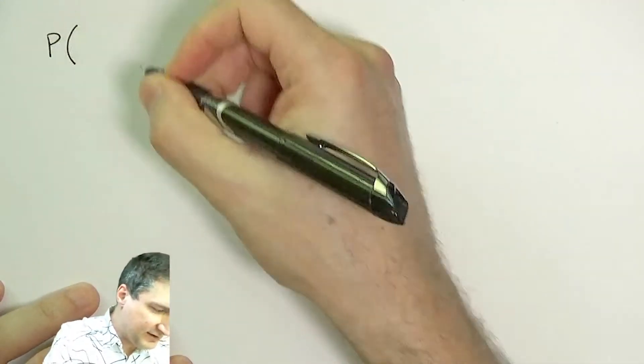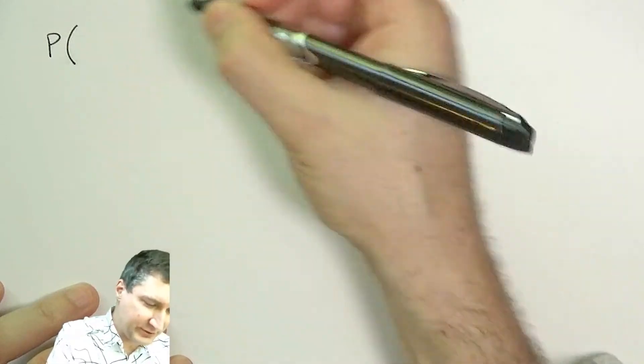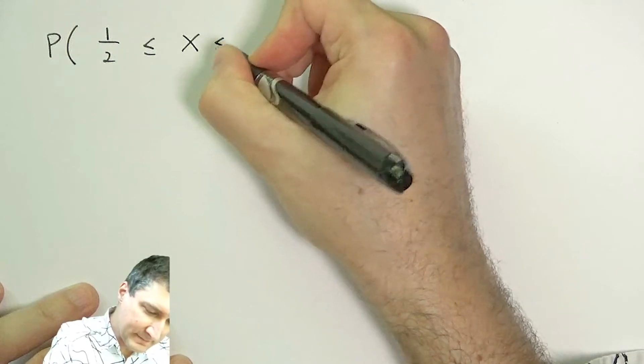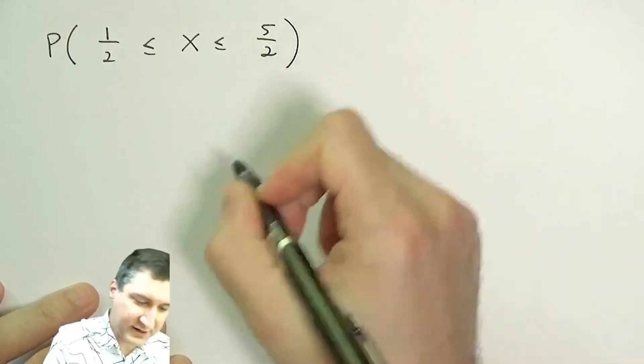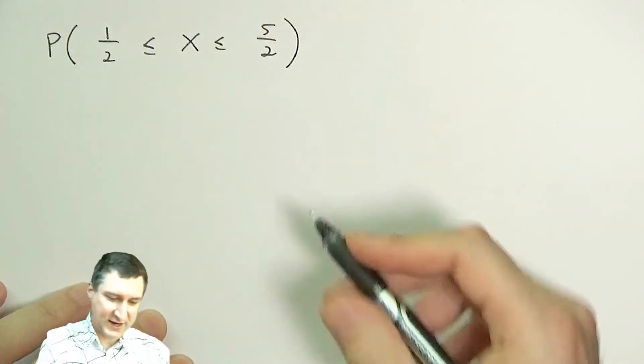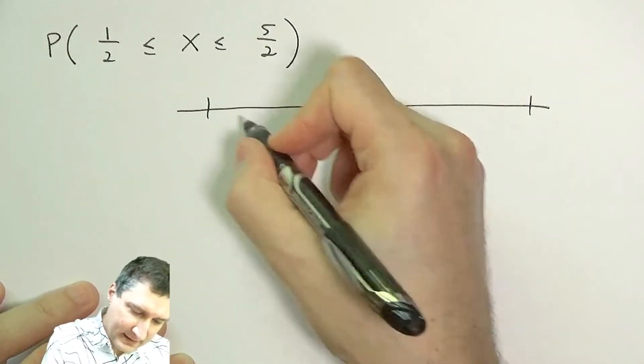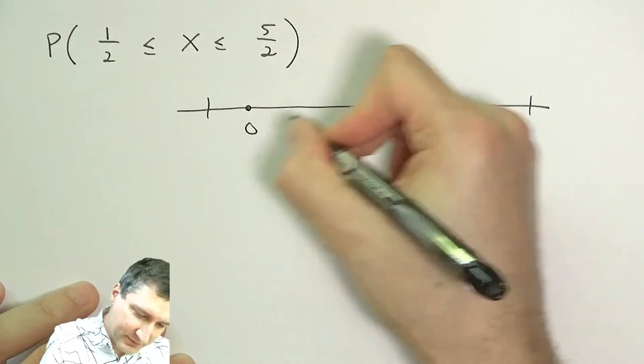Okay, and then I could say, I can ask what's the probability of, you know, say I want to ask something like this: what's the probability that my random variable is in this range?